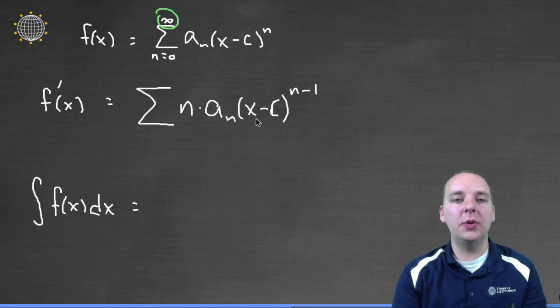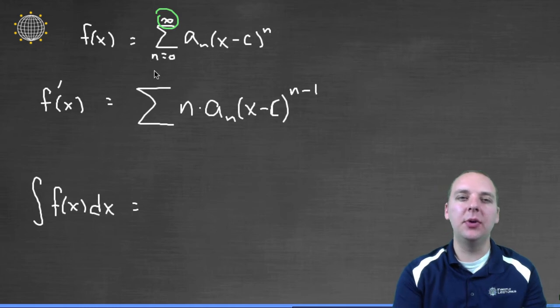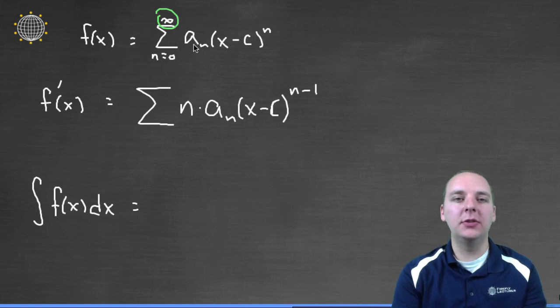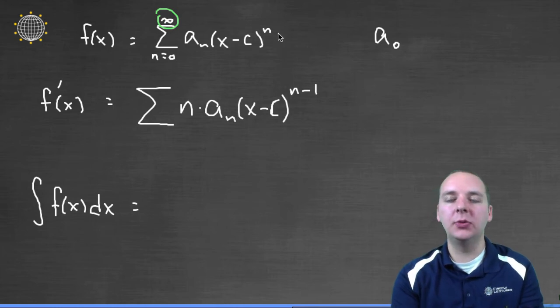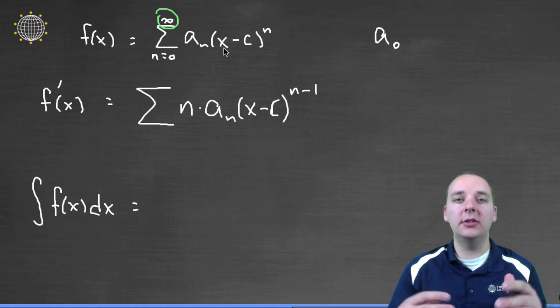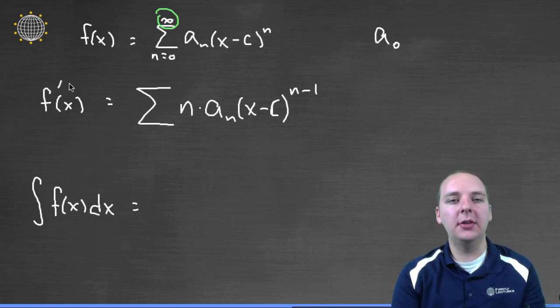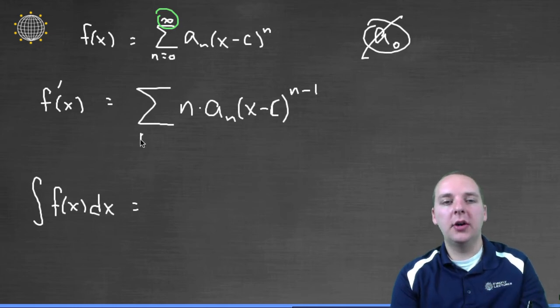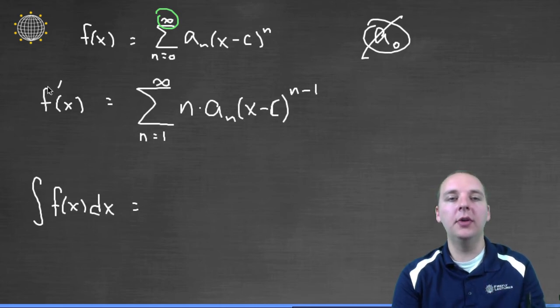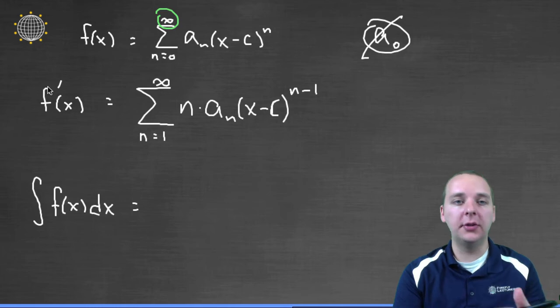The last question is, what is our index, is it still zero to infinity? Well it's actually not. Think about this for a minute. If n equals zero for the very first term, you would have a sub zero, and then x minus c to the zero, but that's one. So the very first term in this very long sum would be a sub zero. But when you take the derivative, what's the derivative of a constant? Well, zero. So in effect we lose the zeroth term. We would actually start our summation n equals one to infinity. Remember that when you're taking a derivative, you lose the constant term, you lose the first term, so your series starts at one, not zero.